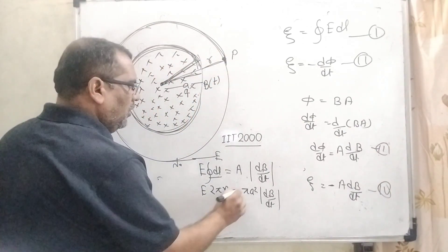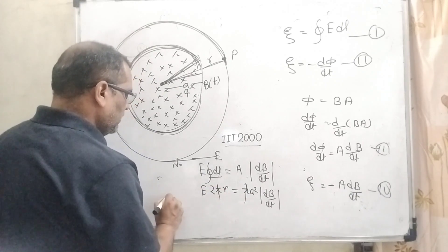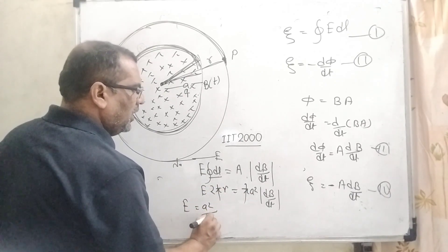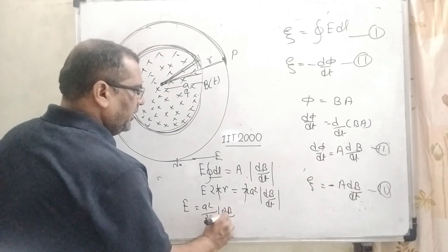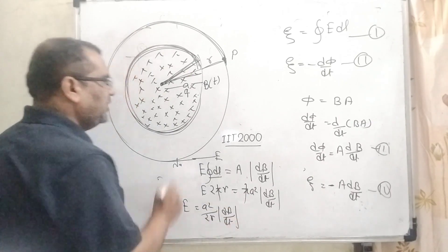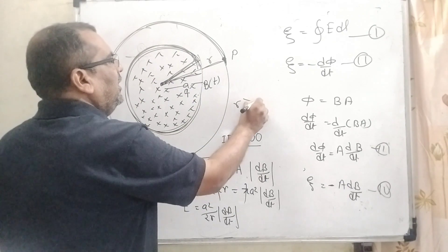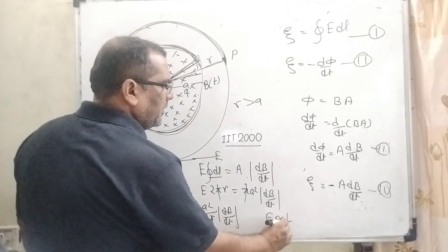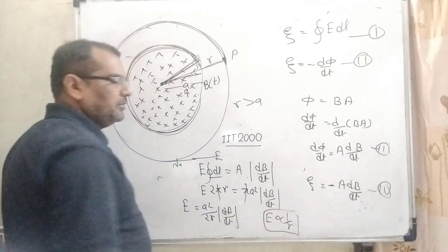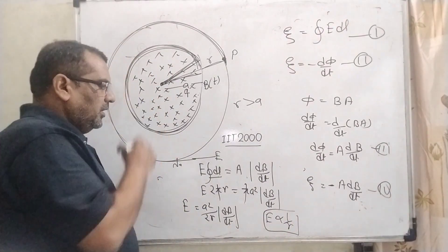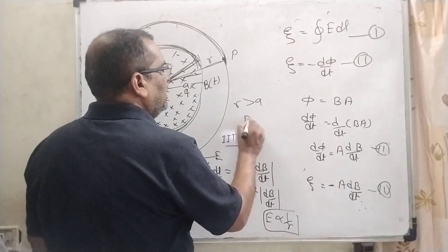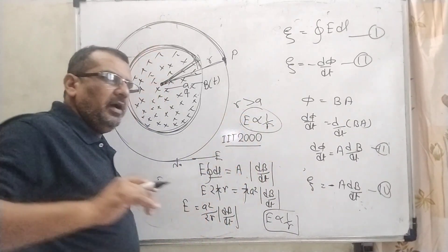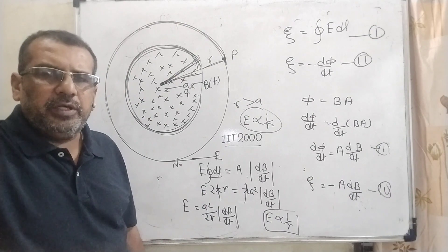The π cancels out, giving E = (a²/2r)·dB/dt. You can see that r is greater than a. Therefore, E is inversely proportional to r. The correct option is (b): E decreases as 1/r.